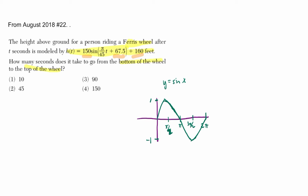2 pi over the period is pi over 45. The period's 90 seconds, right? We'll get to that.